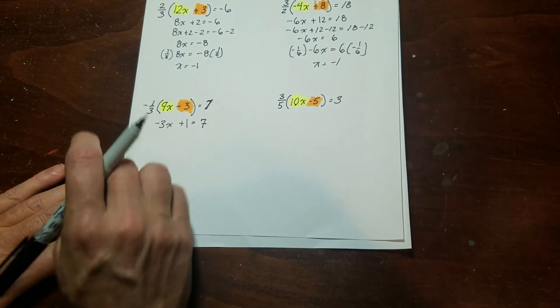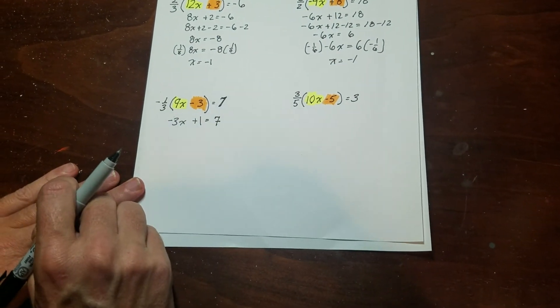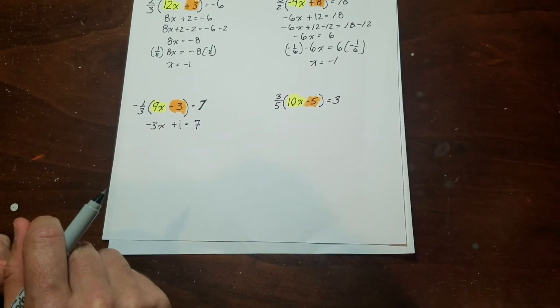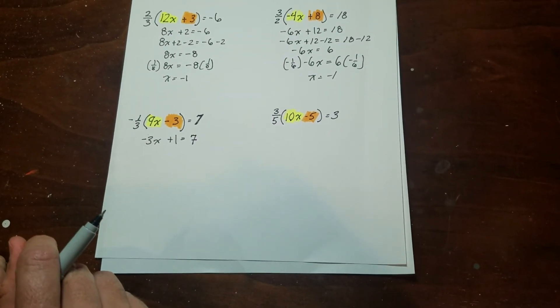So here I've got some negative stuff going on. You always got to be careful with your negatives and positives. But you can see how that worked out. And all I've got now is a two-step equation. I can go ahead and solve that as I would normally.